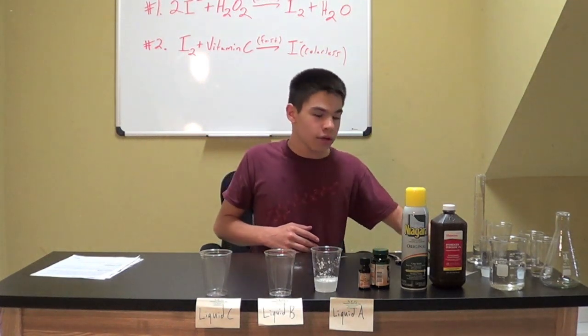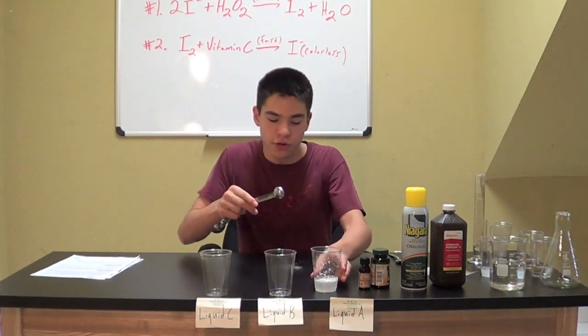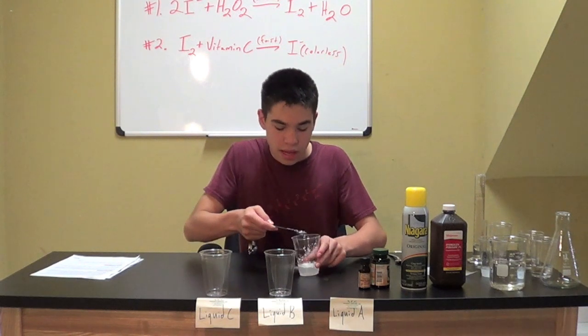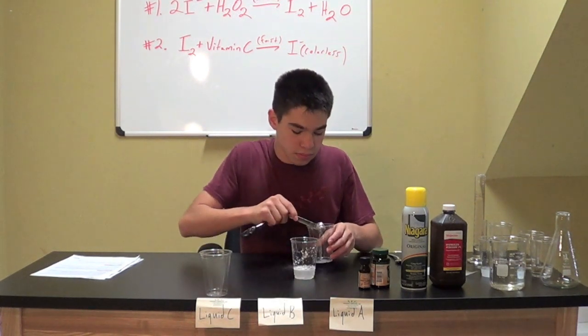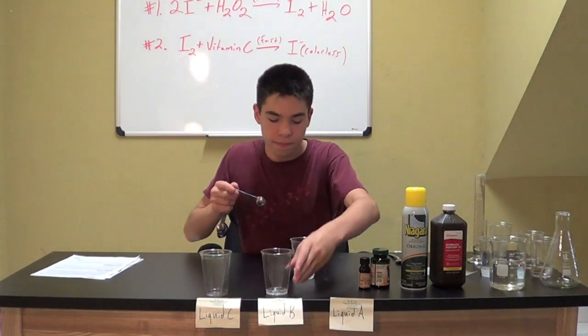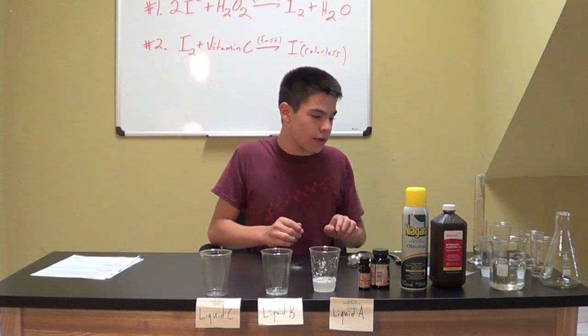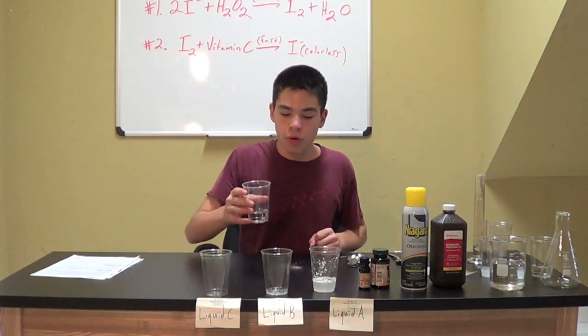Now, using measuring spoons, take 1 teaspoon or 5 milliliters of solution A and place it into a new cup. Then, to the new cup, add another 60 milliliters of lukewarm water.